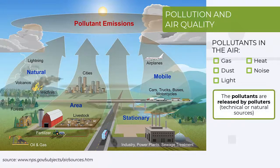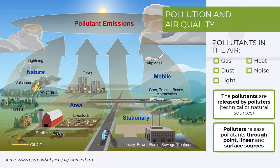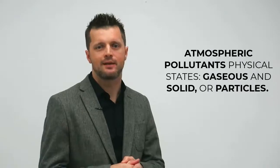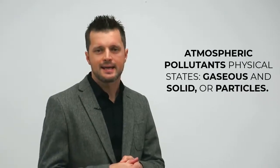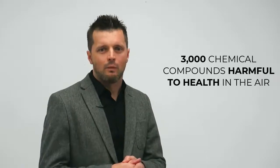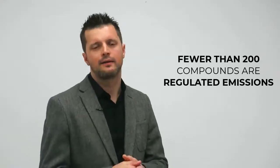The pollutants are released by the polluters, which can be technical or natural sources. The polluters release pollutants through point, linear and surface sources. Pollutants from waste gases change the concentration of air components. Atmospheric pollutants exist in two basic physical states: gaseous and solid, or particles. Three thousand chemical components harmful to health are recorded in the air, but fewer than 200 air emissions are regulated.